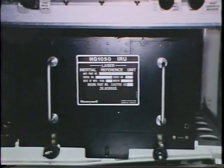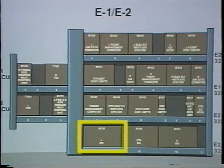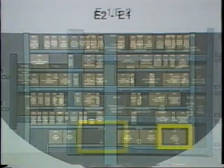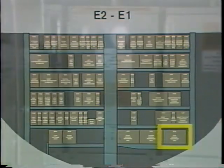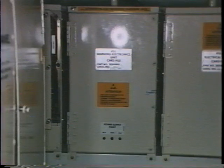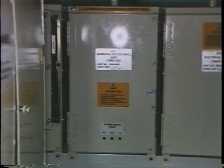The left inertial reference unit sends inertial velocity. This unit is also an alternate source of latitude, longitude, and magnetic track data. It is on the E2 rack on the 757 and on the E1 rack on the 767. The left and right stall warning computers provide angle of attack and flap position. They are in the warning electronics unit on the P-51 panel on both the 757 and 767.